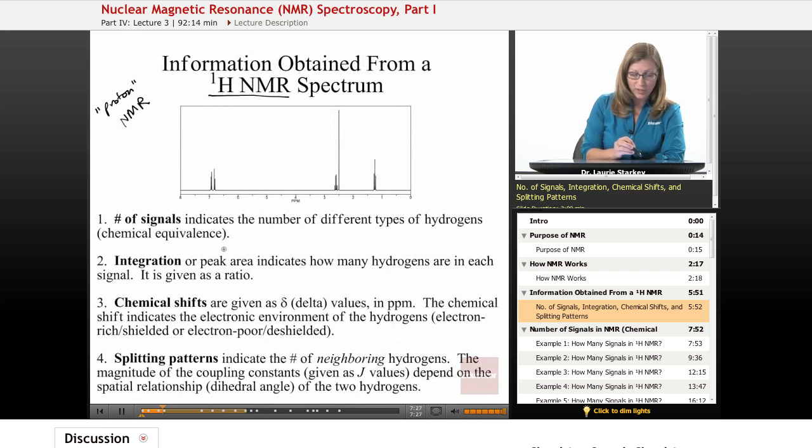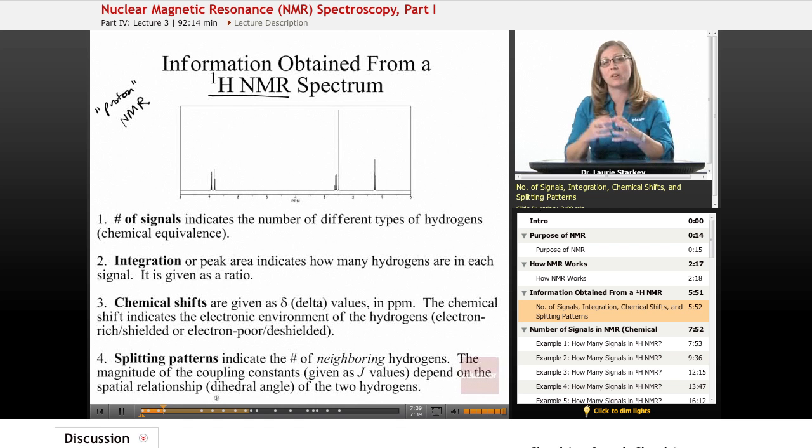Finally, we're going to look very closely at the peaks and the shapes of those peaks to identify what's known as a splitting pattern. Is it a single peak? Is it split up into two or three peaks? That's going to tell us something about the neighboring hydrogens on the structure. You'll see we're going to be able to put our pieces together depending on these splitting patterns, and we'll explore each of these one at a time.